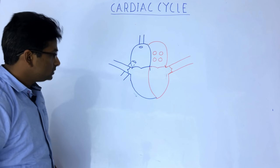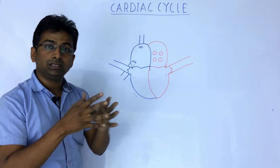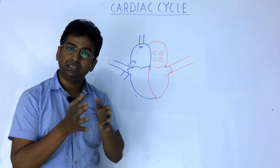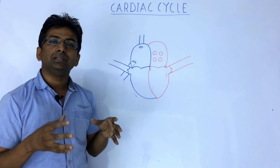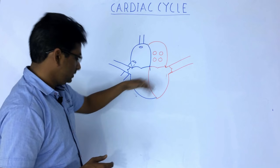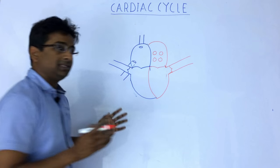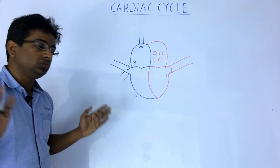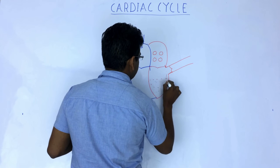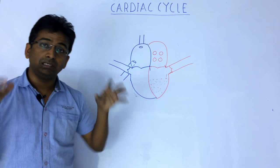When both atria contract, that is called atrial systole. When the ventricle contracts, that is called ventricular systole, and when they relax, that is diastole. Let us consider a condition where the ventricle is in full diastole — it is completely relaxed and filled with blood received from the atria.